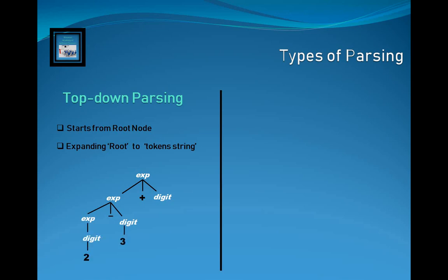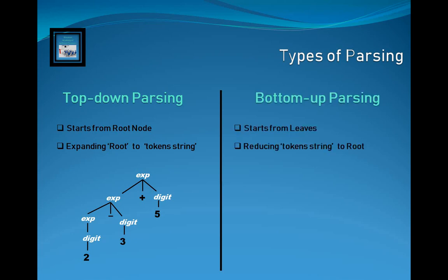The second approach is bottom-up parsing. This parsing approach starts from the leaves, and the leaves — or the string of tokens — reduce to the root node. For example, if you have the string of tokens 2, 3, plus, 5 for an expression, you will start from leaves and proceed towards the root node.